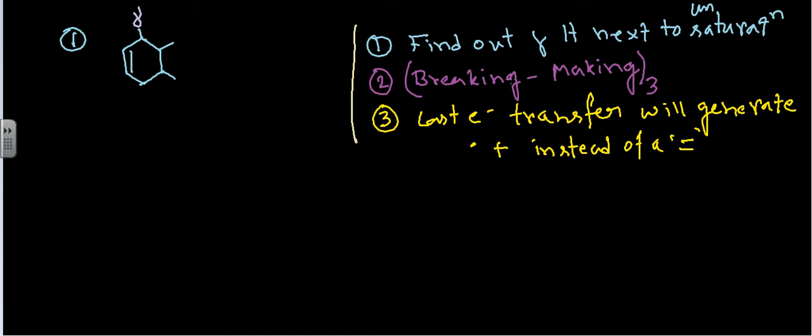And second one is the breaking and making of the bond three times in a row. That's the second part and we'll be doing it now. And last, the last electron transfer will generate a dot and a plus instead of a double bond. So let's follow this process.